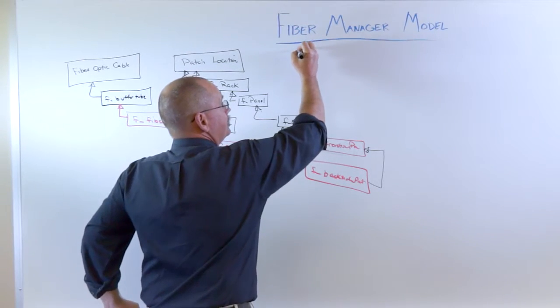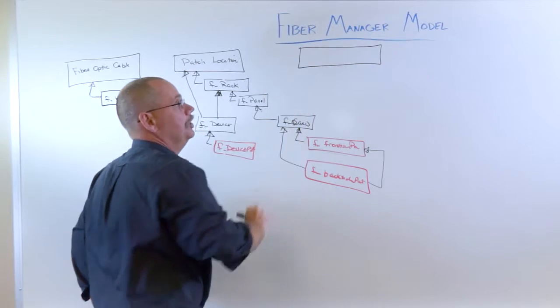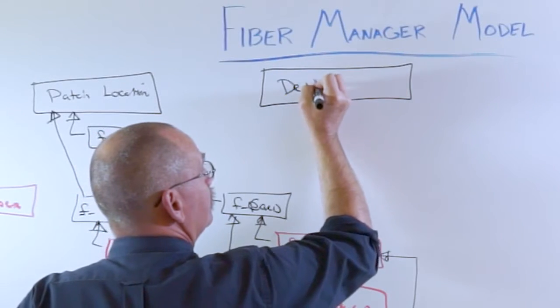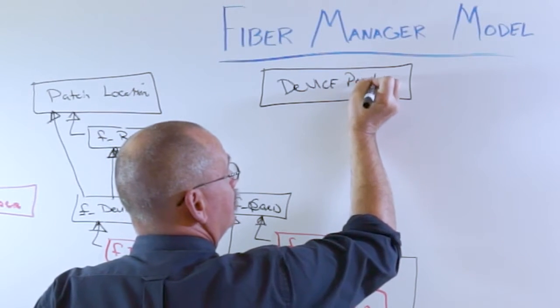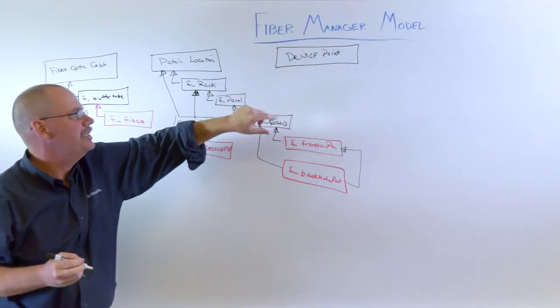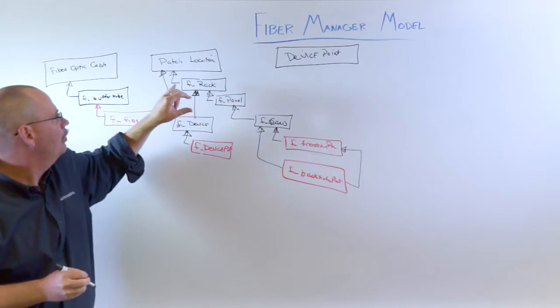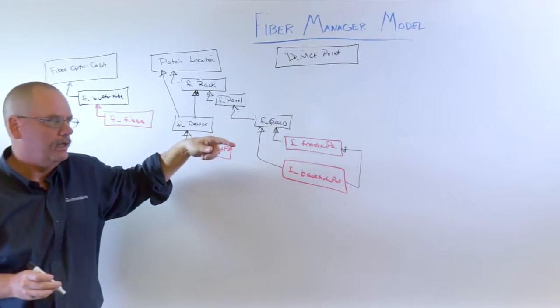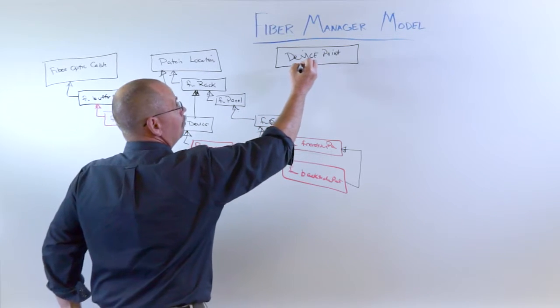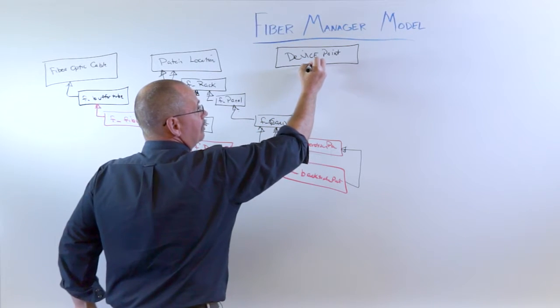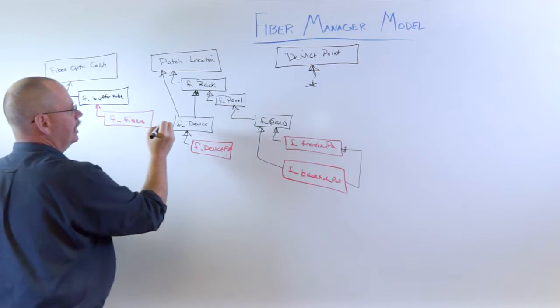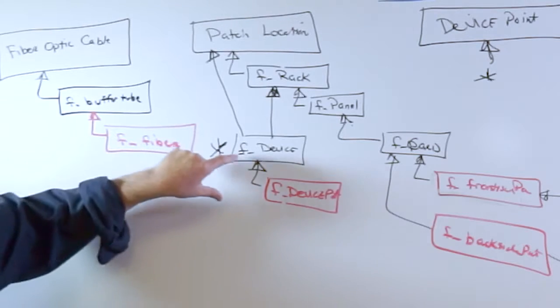A third object or a third feature class is the device point. A device point is typically the customer, the end of the line. Where are we sending our fiber to? Our telecommunications. Now, what that does is there is a one-to-many relationship of a device point and I'm putting a star over here to that same device object.